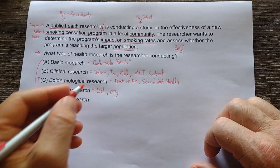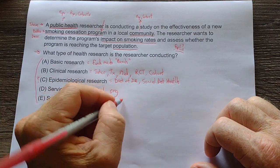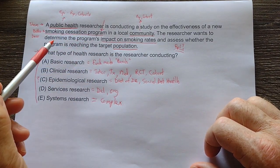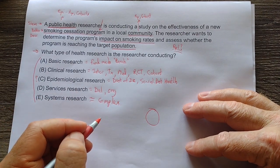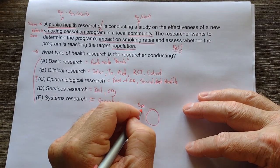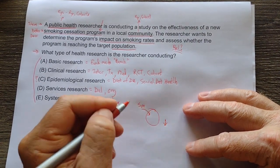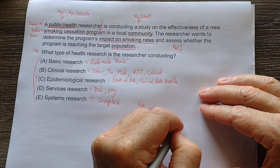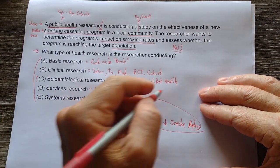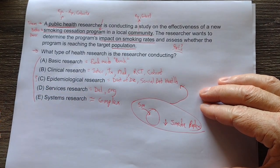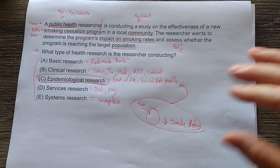And then there's systems research — that complex system. This isn't really breaking down a system. This is just looking overall at a high level: we have this target population within a community, we're giving them a smoking cessation program, and we're hoping to decrease the smoking rates. So for me, this sounds like it relates to epidemiologic research, and that is the correct choice — epidemiologic research.